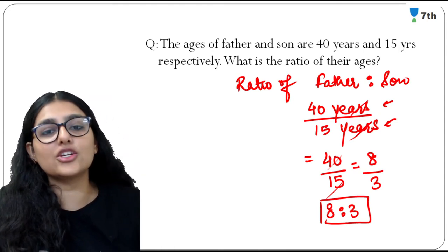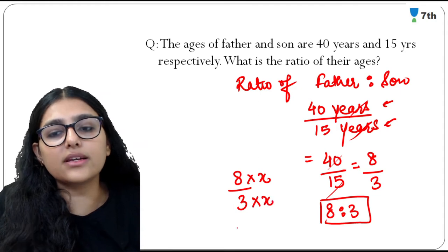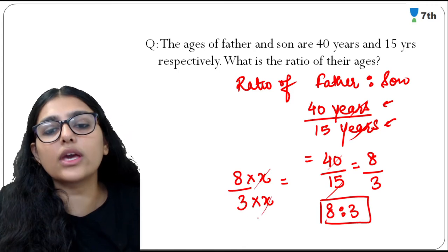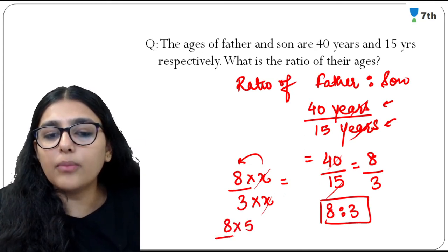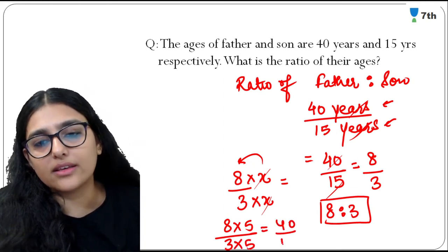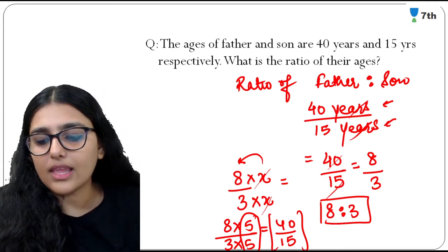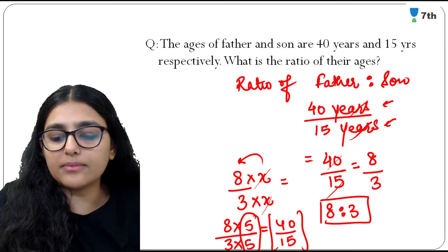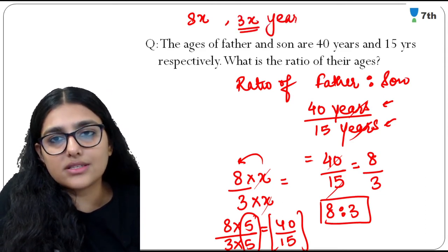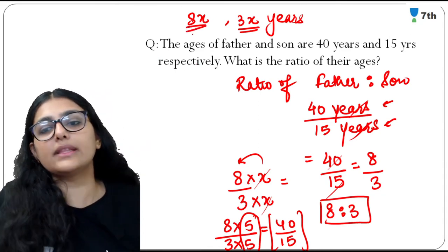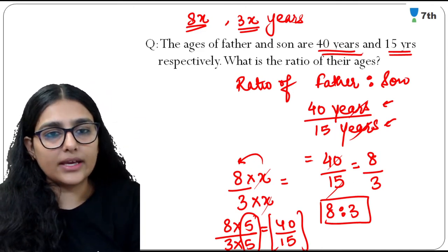The 8 and 3 are the ratio terms — father's age is not 8 years and son's age is not 3 years; we multiply both by a common factor x. So father's age is 8x and son's age is 3x. The ratio is 8:3 and the value of x (which is 5) tells us the actual ages. For ratio, we just divide two values with the same unit.